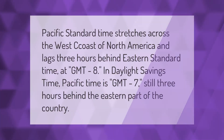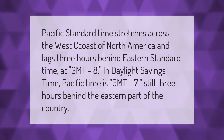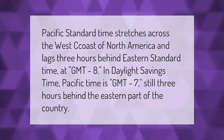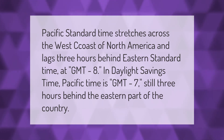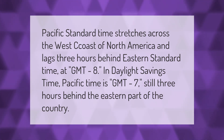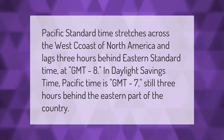Pacific Standard Time stretches across the west coast of North America and lags three hours behind Eastern Standard Time at GMT-8. In Daylight Saving Time, Pacific Time is GMT-7, still three hours behind the eastern part of the country.